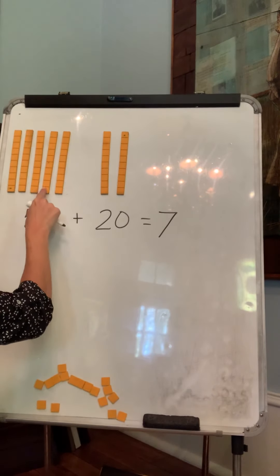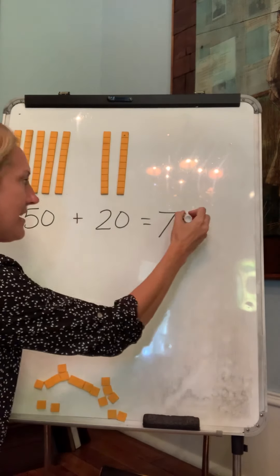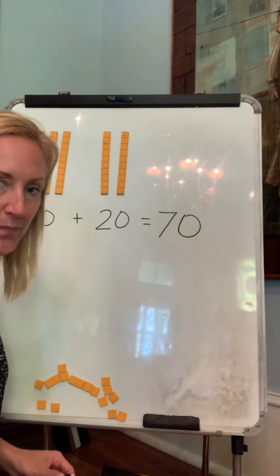which is 10, 20, 30, 40, 50, 60, 70. 70. Okay. All right.